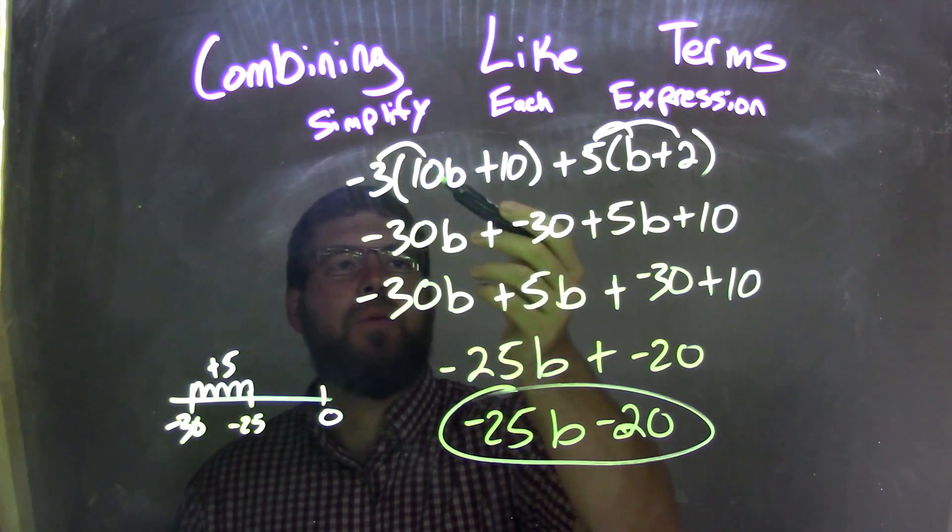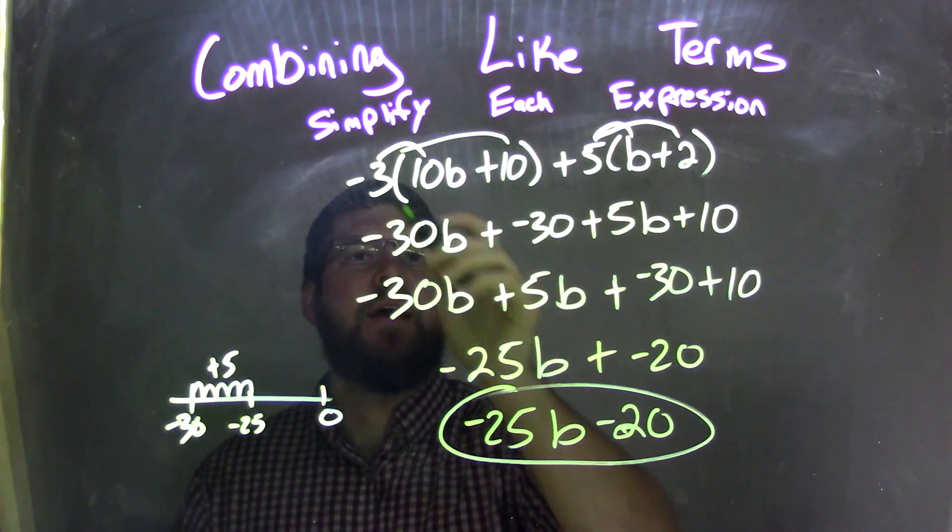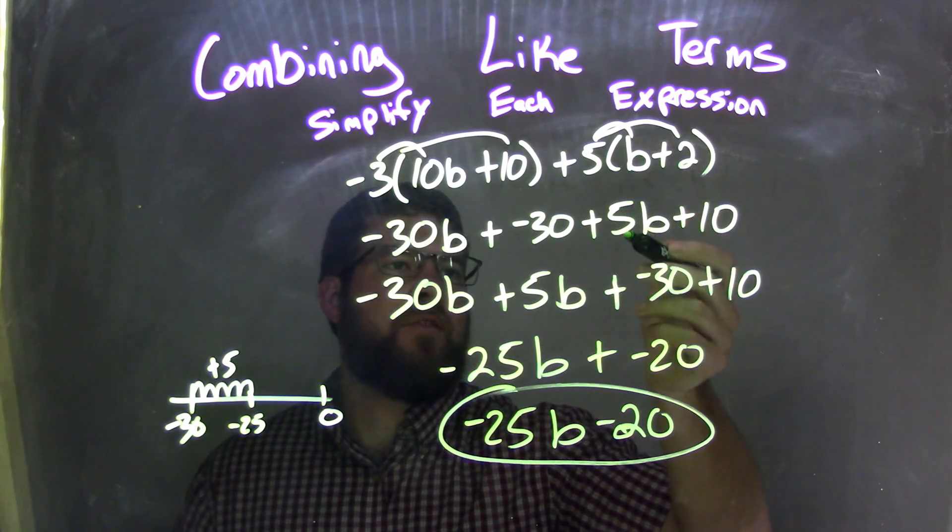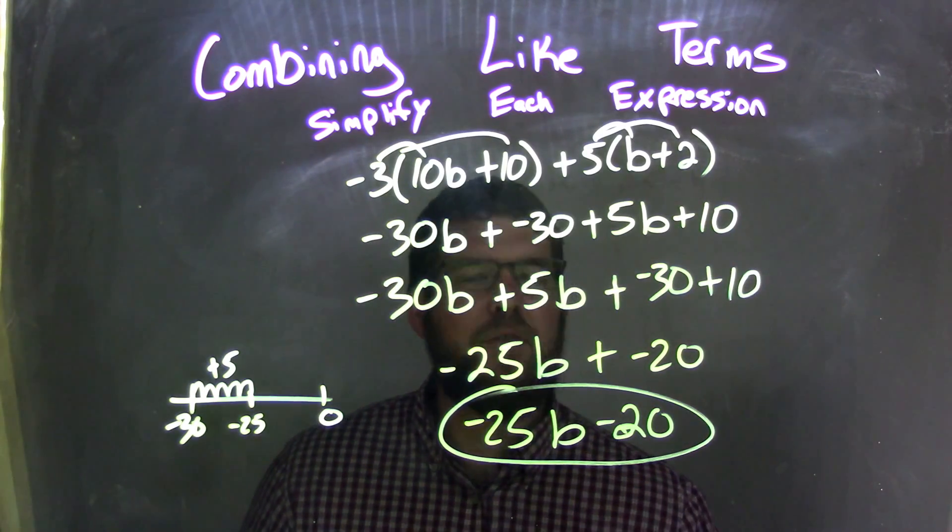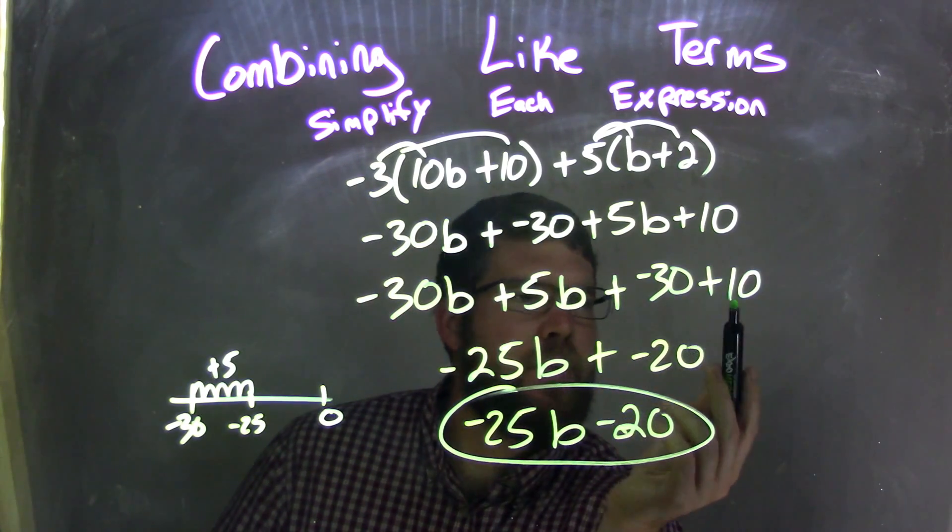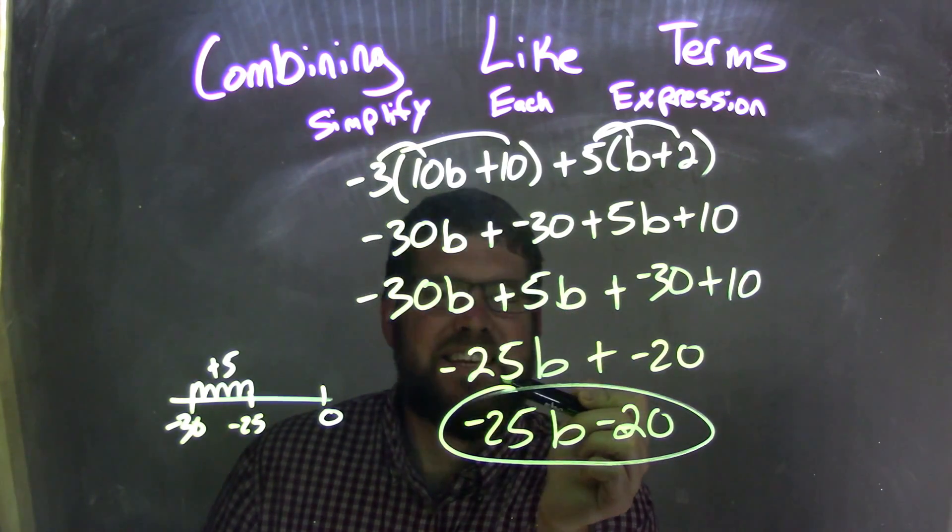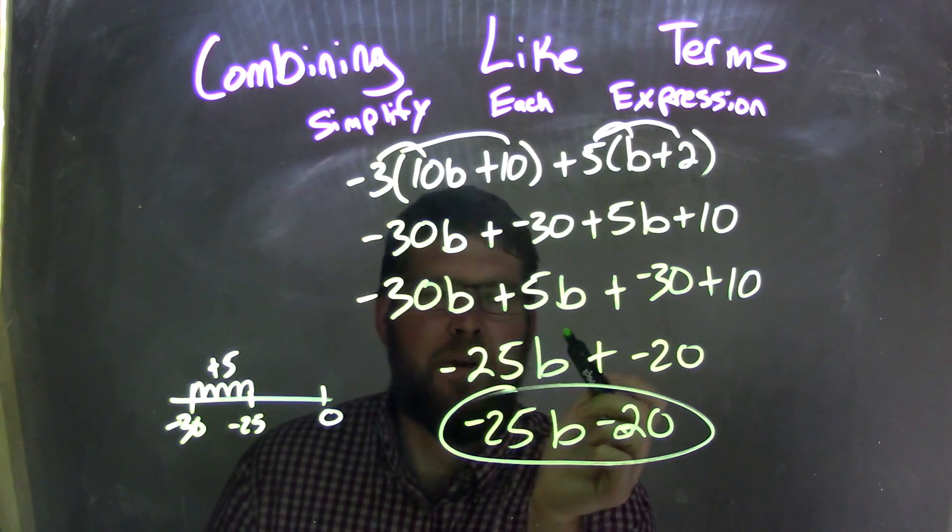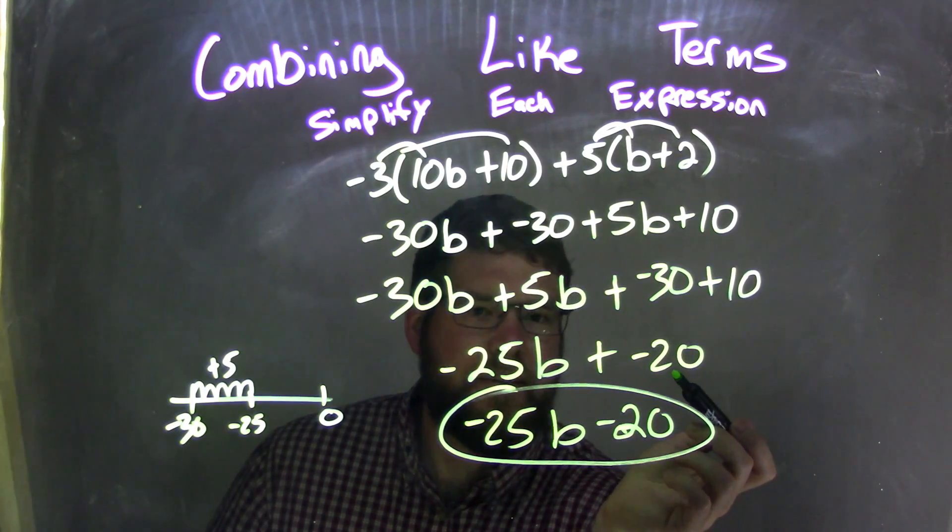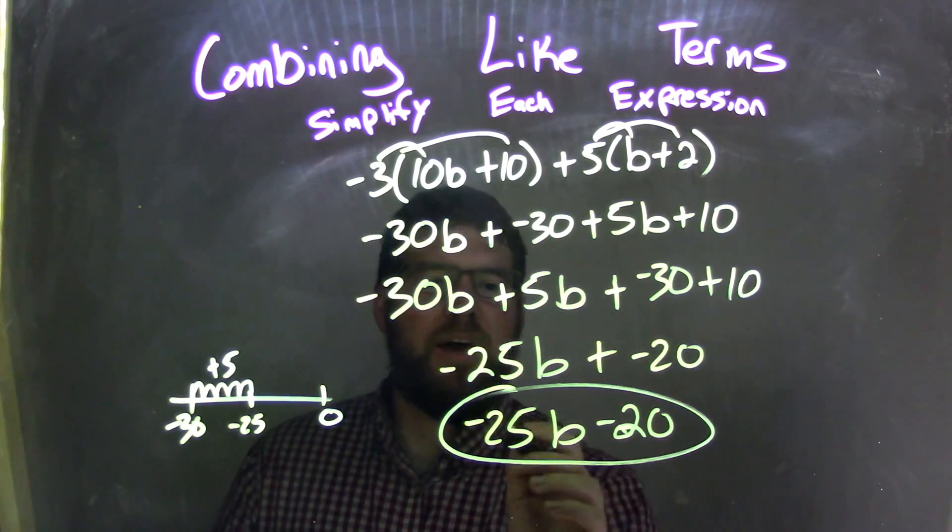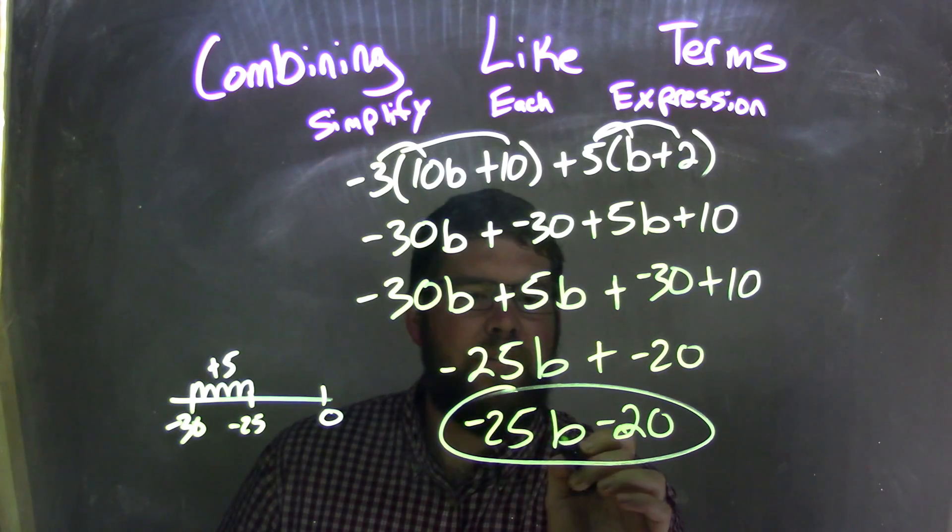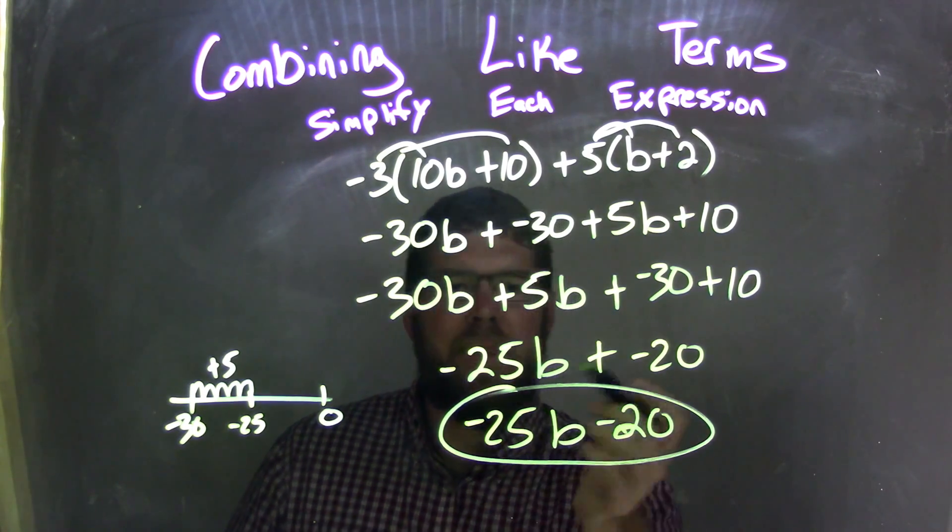So let's recap. We distributed negative 3 across to get negative 30b and negative 30. 5 times b is 5b, and 5 times 2 is 10. We use the commutative property to rearrange and put our like terms next to each other. Negative 30b plus 5b is negative 25b, and negative 30 plus 10 is negative 20. Adding a negative is the same thing as subtraction, so negative 25b minus 20, and that is our final answer.